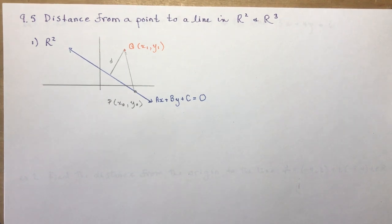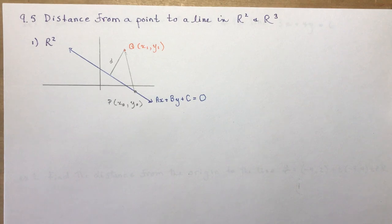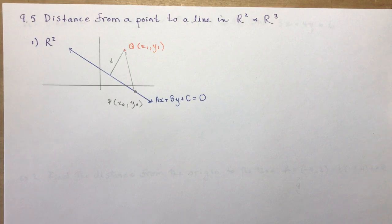Section 9.5: the distance from a point to a line in R2 and R3. This is your second last lesson for vectors and we're going to get right into it by looking at the distance from a point in R2.